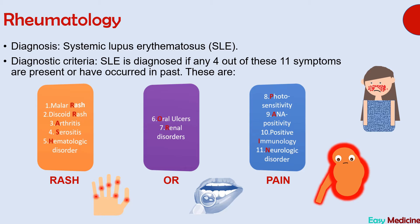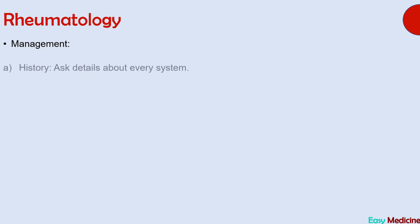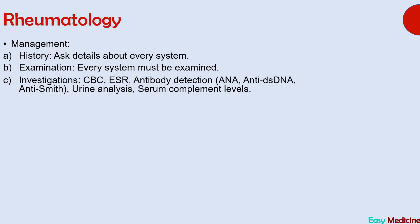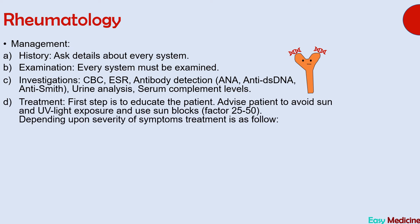The management of SLE begins with history and examination of every system, since it is a multi-system disease. Investigations include CBC, ESR, antibody detection — specifically anti-nuclear antibody, anti-double-stranded DNA antibody, and anti-Smith antibody. The last two are highly specific for SLE. Other investigations are urine analysis and serum complement levels.